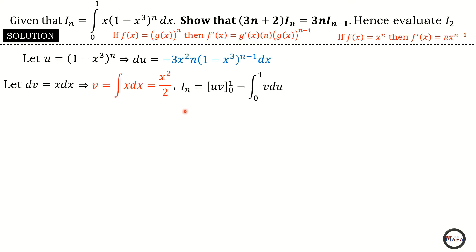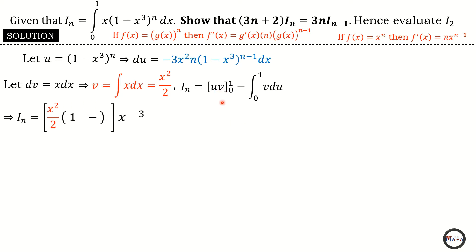The integration by parts principle says that I of n equals uv evaluated at the limits of integration, minus the integral from zero to one of v du. Many students make an error here — they don't substitute the limits of integration into the uv term, which is wrong. It is only when you have an indefinite integral that you write uv without limits. When you have limits of integration, always substitute them into uv.